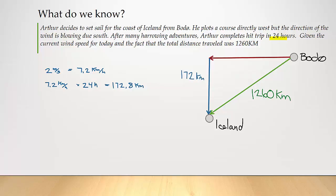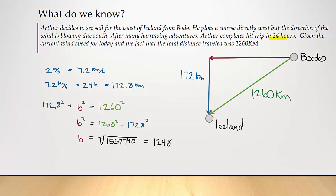Now I want to figure out the length of the bearing vector. I can use the Pythagorean theorem because we have a right triangle: 172² + B² = 1,260². Solving for B, taking the square root, gives us 1,248 kilometers. I'll label that distance on the diagram. Now I have all distances labeled and a complete diagram, and I can return to the problems I'm trying to solve.